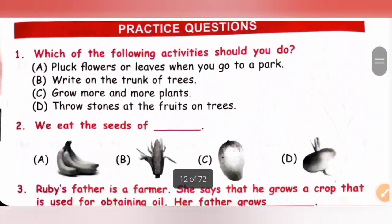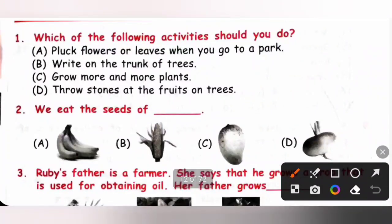Let's see the practice questions. First one, which of the following activities should you do? Option A: pluck flowers or leaves when you go to a park, no. B: write on the trunk of trees, no. C: grow more and more plants, yes. D: throw stones at the fruits on trees, no. So option C is the correct answer.